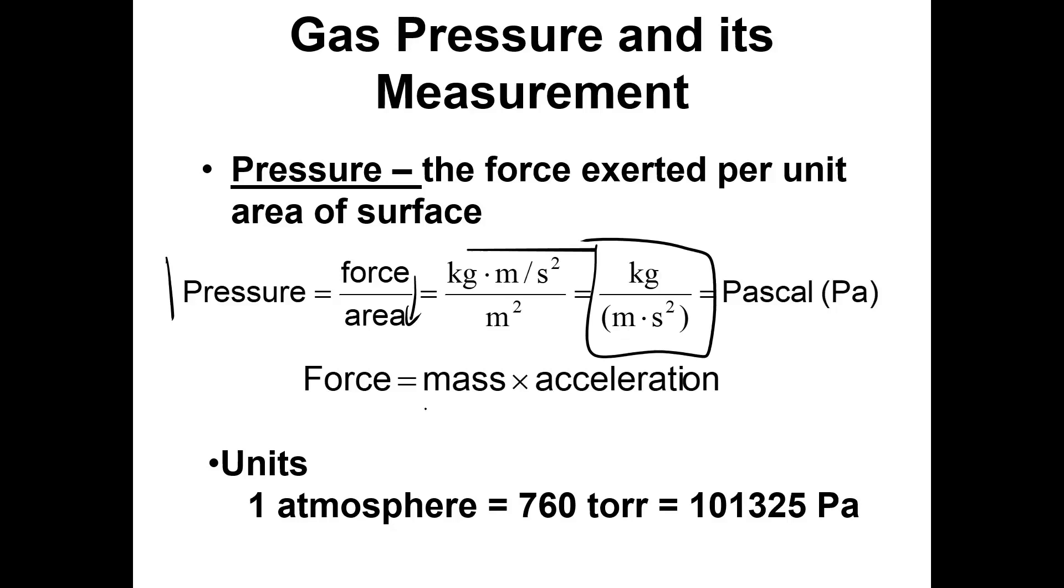It's mass times acceleration. We measure this usually in millimeter mercury, or which is the same as torr, or atmospheres, which is much easier. But the SI units here, kilograms per meter per second squared, we're going to turn that into a Pascal. You can use this as a conversion factor.